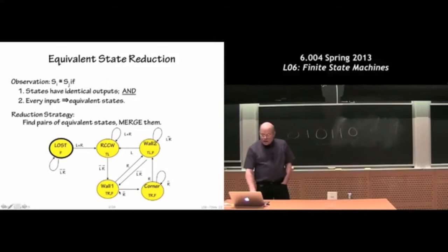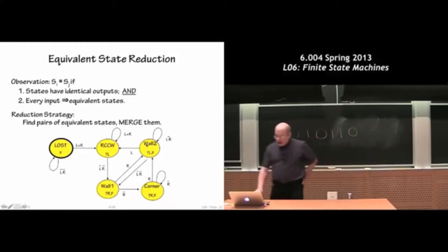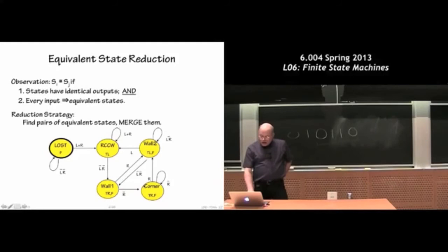OK. And then considering these two states as possible candidates to be equivalent, I'm going to ask the question, does every input take them to an equivalent state? In other words, what I want to do is, is the behavior when I see an R or an L in this state the same as the behavior I see in an R and an L in that state? And in fact, if you look closely at the diagram, you will discover that in both cases, R takes them to wall 2.